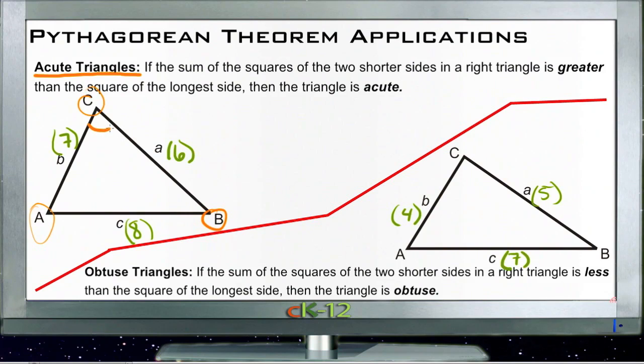This angle up here at c is less than 90. And this angle down here at a is less than 90. And this angle over here at b is less than 90. So that makes this an acute triangle. And we could identify that without necessarily knowing exactly how it would look just by taking the dimensions of the three sides.